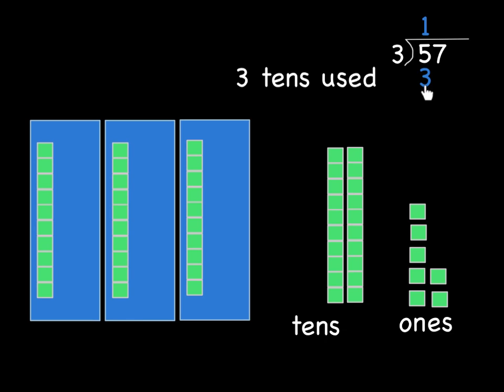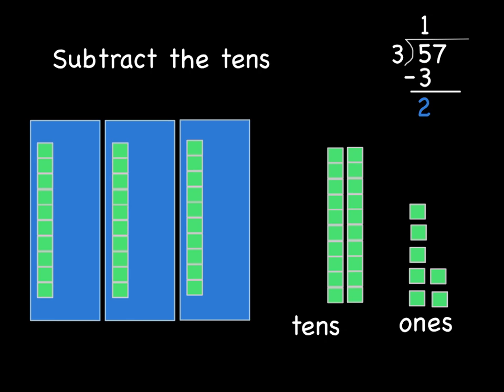So in the algorithm, we would write a 3 underneath the 5 to show that we put 3 tens into our groups. And that means we use 3 tens out of the 5. How many tens are in each group? 1. That's the part of the quotient up here is our answer. So, so far, dividing 57 by 3, we come up with one even group of tens for each of the 3 groups. And that means we have 2 tens left over, right? So in the standard algorithm, we do 5 minus the 3 that we divided. Leaves us with 2 more tens that have to be dealt with somehow. But we can't divide them by 3. So what are we going to do with them?